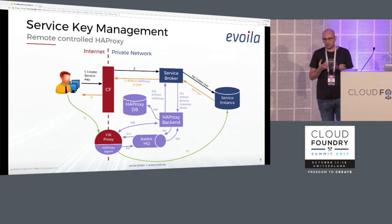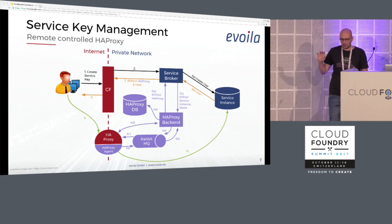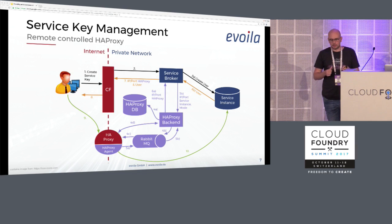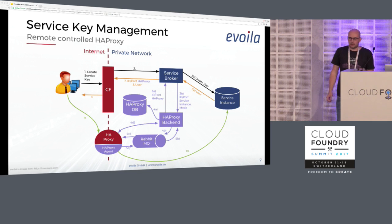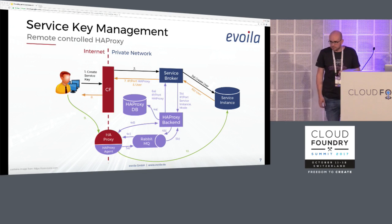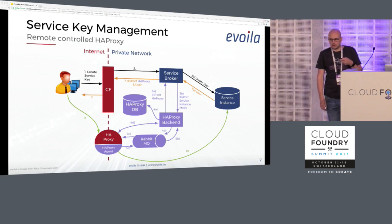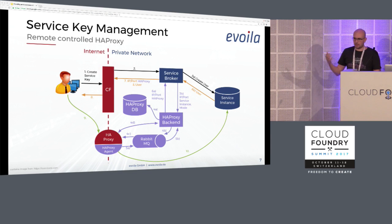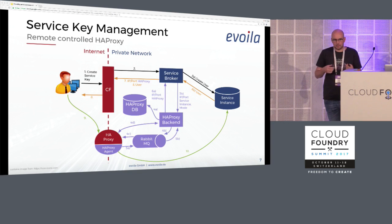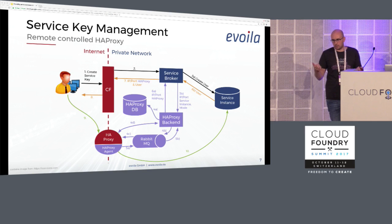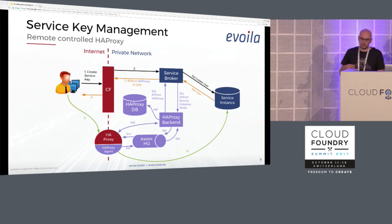So we came up with this: we gave our service broker a remote control to an HAProxy config. Now if you create a service key, in addition to creating a new user and password on the service instance, we also talk to our HAProxy backend. We provide this HAProxy backend with the internal IP of the service instance and the port which the service instance is running on. This backend pushes a new message into a RabbitMQ, and a Python program called the HAProxy agent gets this message, updates the HAProxy config, and after that you get back the public IP of this HAProxy and the port that is bound to your service instance. Now you have a publicly available service instance without the service instance being directly accessible. And after you delete the service key, the accessibility is also gone.